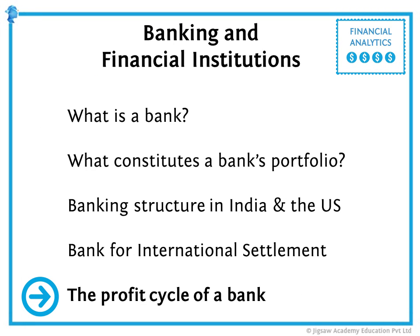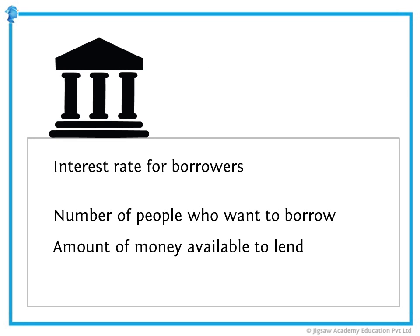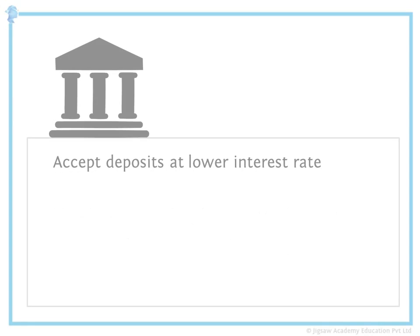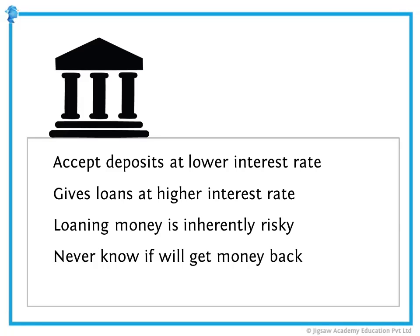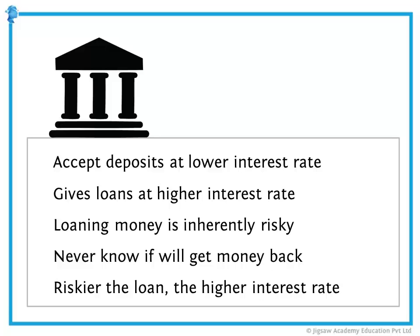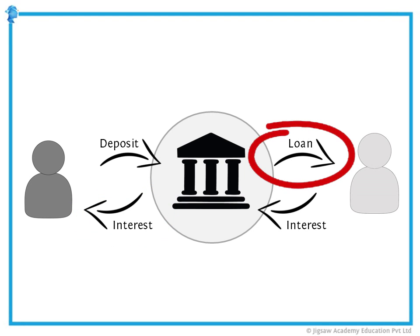Let's look at the profit cycle for a commercial bank. Banks are just like other businesses — their product just happens to be money. The interest rate a bank charges its borrowers depends on both the number of people who want to borrow and the amount of money the bank has available to lend. So it will accept deposits at a lower interest rate and give loans at a higher interest rate because loaning money is inherently risky — a bank never really knows if it will get that money back. Therefore, the riskier the loan, the higher the interest rate charged. The prevalence of loans has actually increased in our economy.